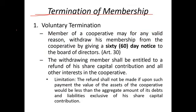Now let us look at termination of membership. First is voluntary termination. Since you have the right to associate — the right to be a member of a cooperative — you also have the right to disassociate. If you are a member and no longer want to join the cooperative, you can have voluntary termination by simply giving a 60-day notice to the board of directors.